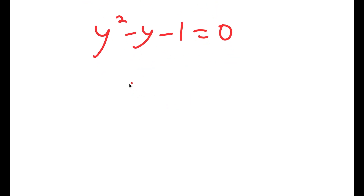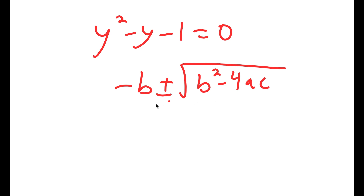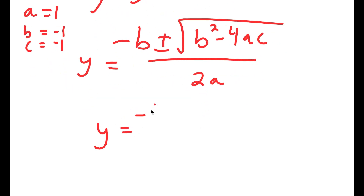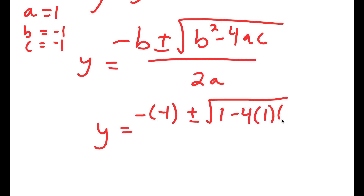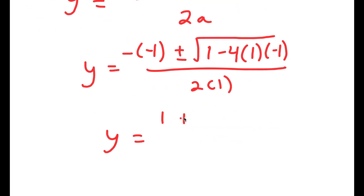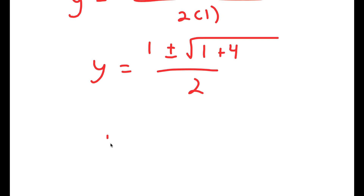To solve this equation I'm going to use the quadratic formula, which is negative b plus or minus the square root of b squared minus 4ac all over 2a. In this case, a is 1, b is negative 1, and c is negative 1. So I get y equals negative of negative 1 plus or minus the square root of negative 1 squared, which is 1, minus 4 times 1 times negative 1, all over 2 times 1. This equals 1 plus or minus the square root of 1 plus 4 over 2, which is 1 plus or minus the square root of 5 over 2.